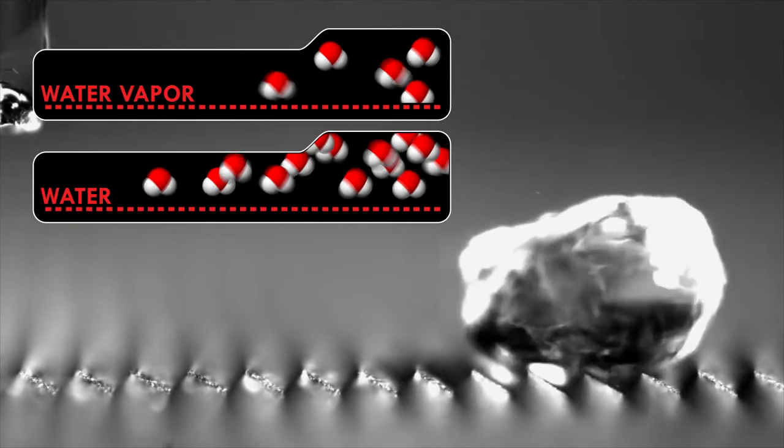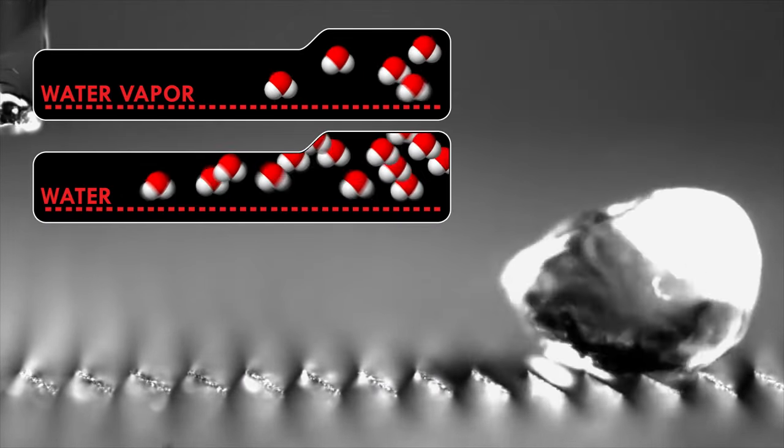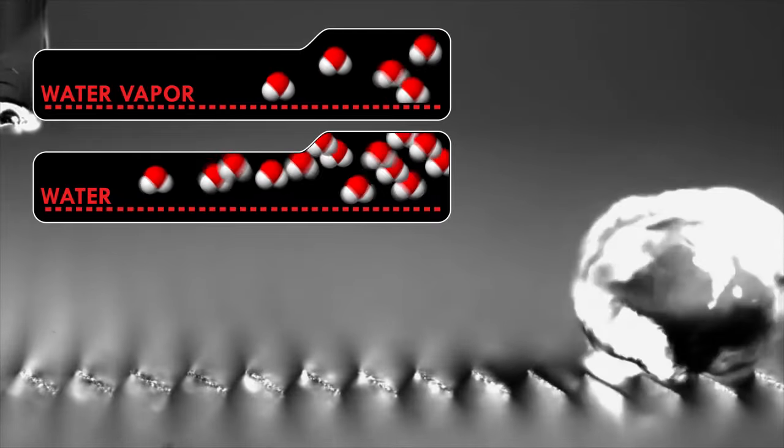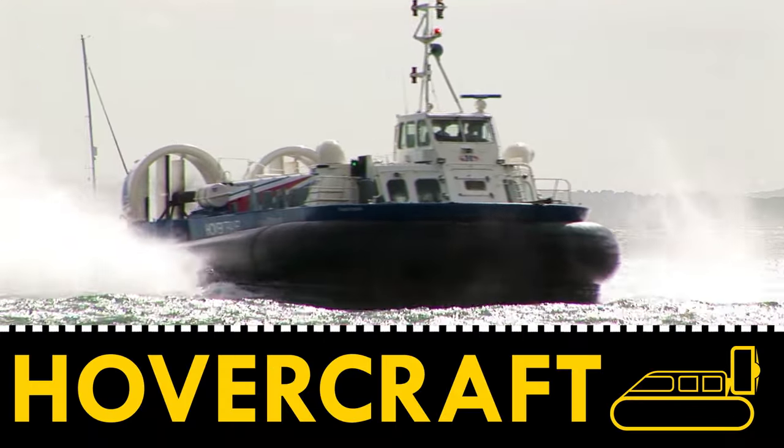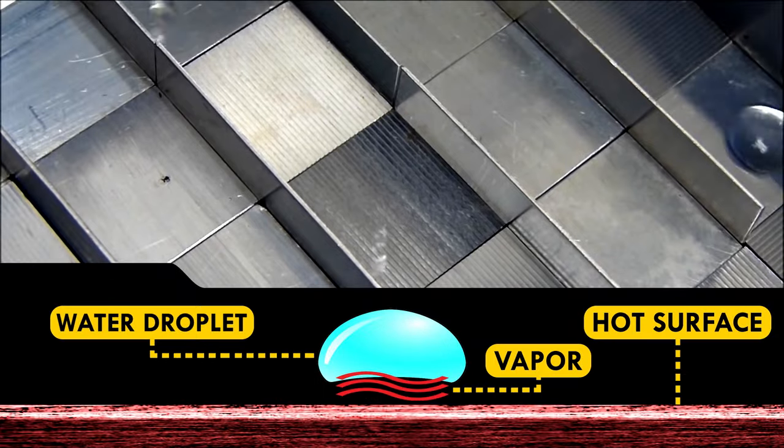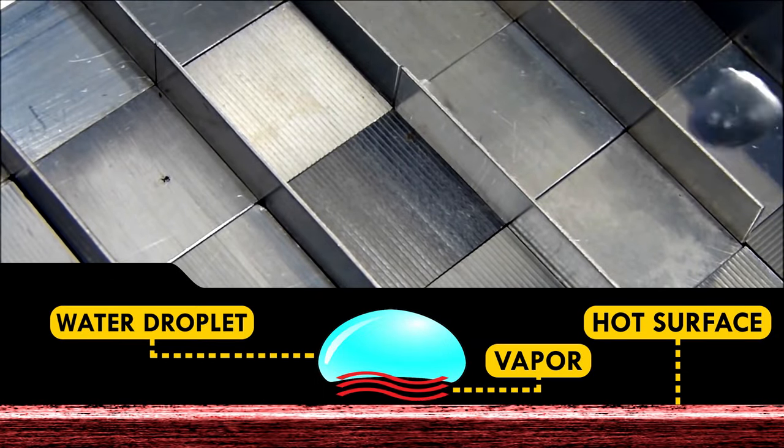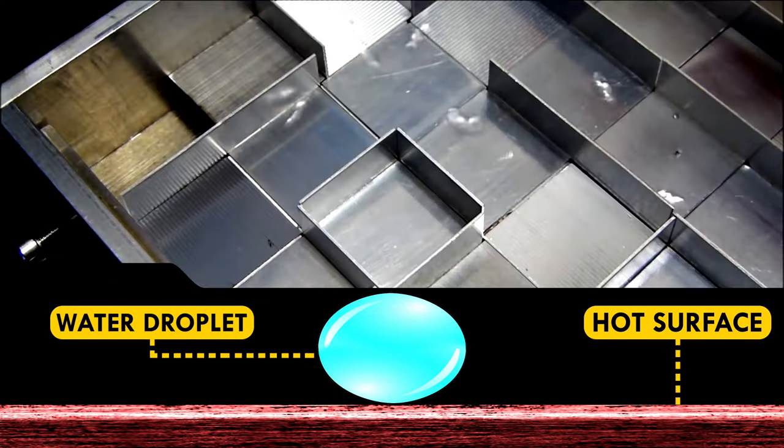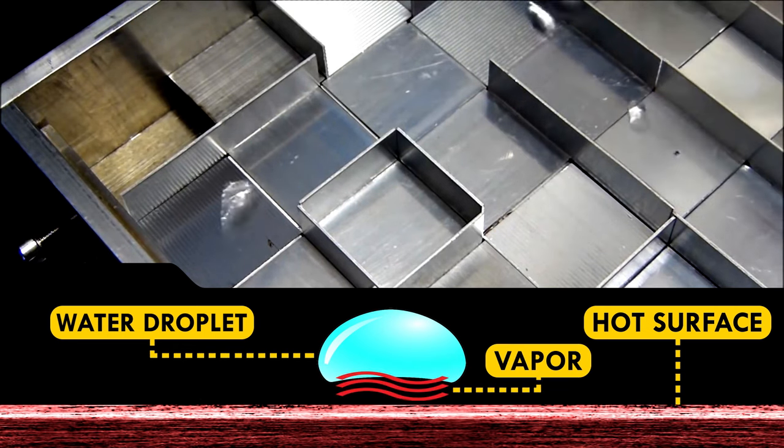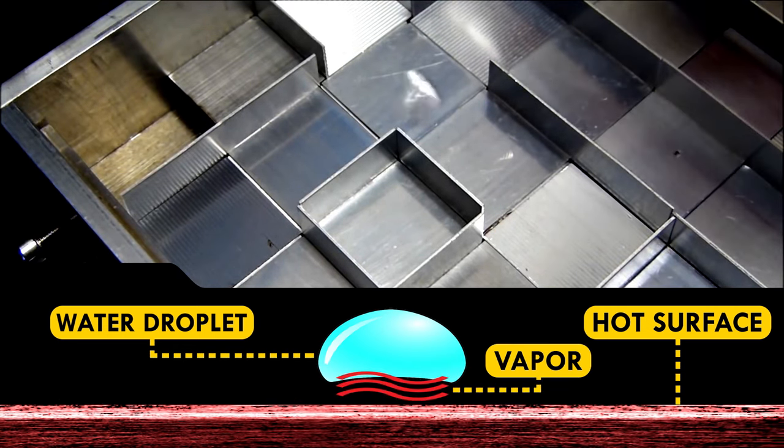Water vapor conducts heat 30 times less well than liquid water because steam has fewer molecules per volume. The water vapor under the droplet works a little like a hovercraft. As the droplet slides around the plate without a hovercraft skirt, the vapor will leak away. But any new liquid contact of the droplet will flash vaporize, so the cushion can persist overall.